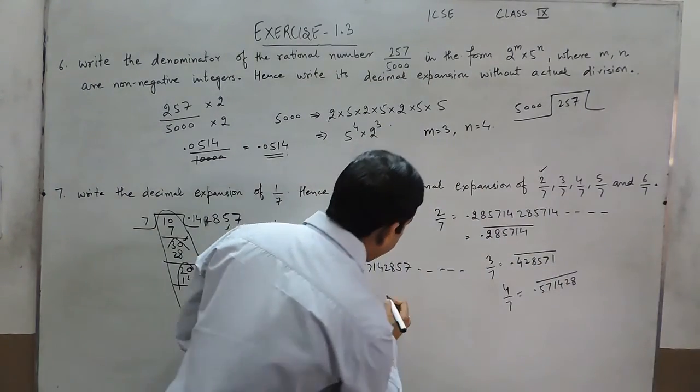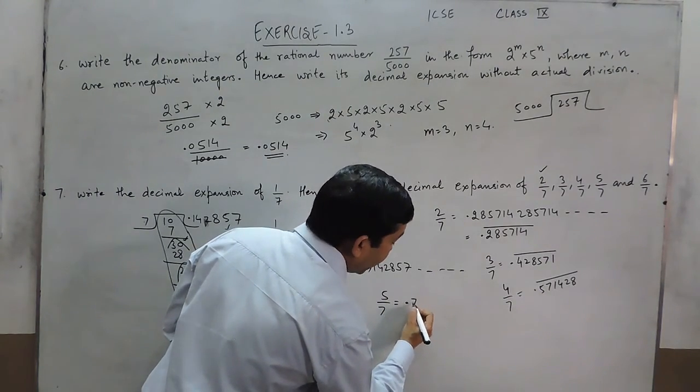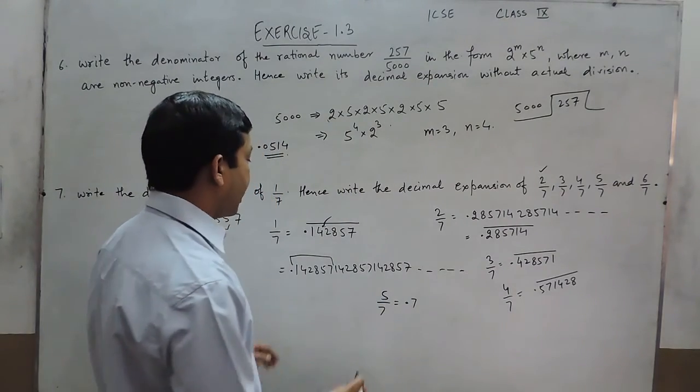Same way for writing a number 5 upon 7, it is 0.7, the process will start from 7 because 7, 7 is 49, so 7 will be the first number, 714285 bar.